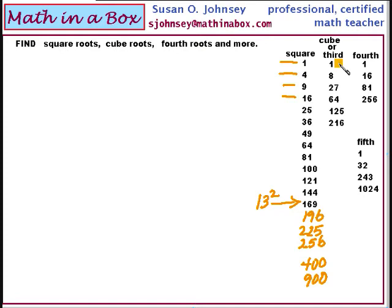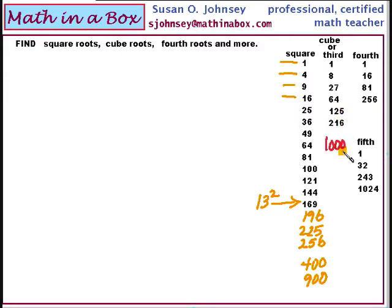1 cubed is 1. 2 cubed — which means write a 2 down 3 times and multiply it — and you'll get 8. 3 cubed is 27. 4 cubed is 4 times 4 times 4, which is 64. 125 is 5 cubed. 216 is 6 cubed.